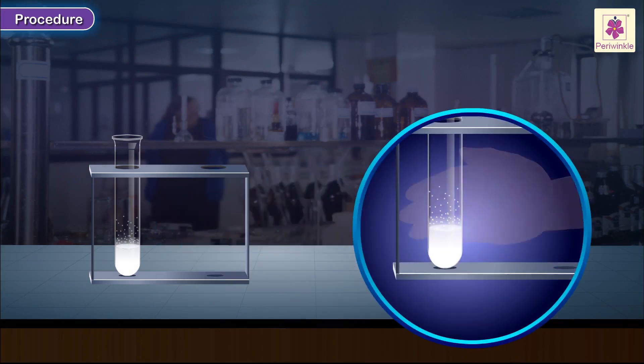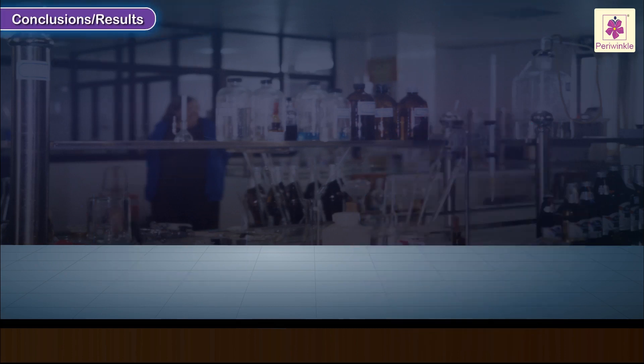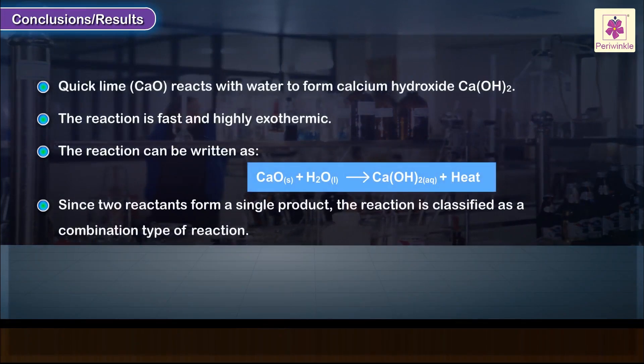Procedure: Cautiously touch the test tube with your fingers to find if there is a temperature change. Observation: The test tube is very hot. Inference: The reaction is a highly exothermic one. Conclusions or Results.